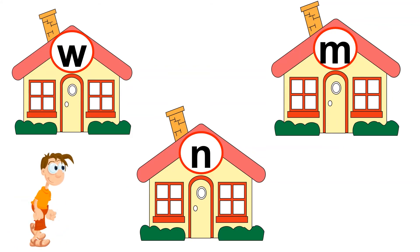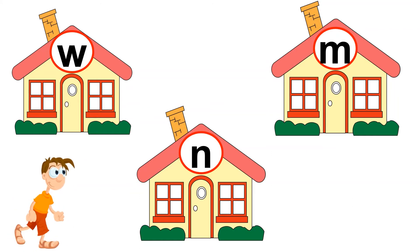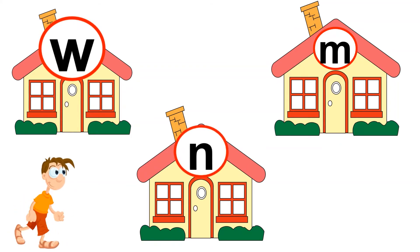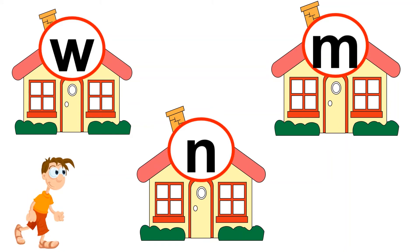This is Wally and he is walking towards his house. Wally, walking — what sound do these words begin with? W. And which letter makes the sound W? It's letter W. W says W. Let's find the house with letter W written on it. Is this letter W? Is this letter W? Or is this letter W? Can you tell me which is letter W? Excellent! Wally, we found your house. You can walk towards your house now.